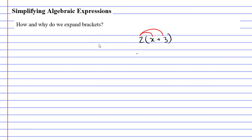So, 2 times x is 2x, and 2 times 3 is 6. Then, because there's a plus here, we're going to put a plus between our two terms.